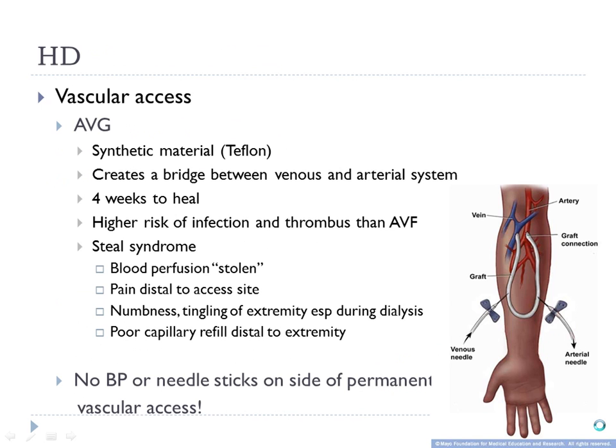An AVG or graft is not the fusing of the vessels themselves — it's a synthetic connection between the venous and arterial system in the arm. To access this graft, you puncture the graft itself. Think of it as a bridge between the two systems. This takes a shorter time to heal because you're just waiting for the graft to heal to a small area of the vessel.